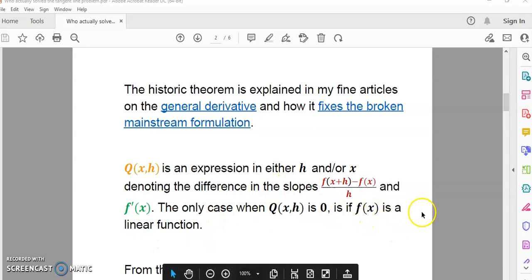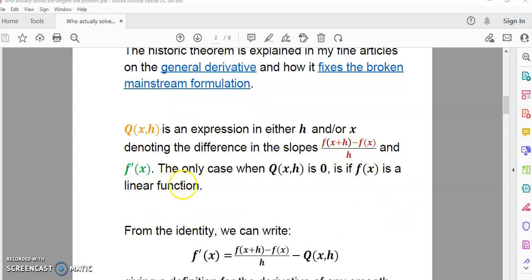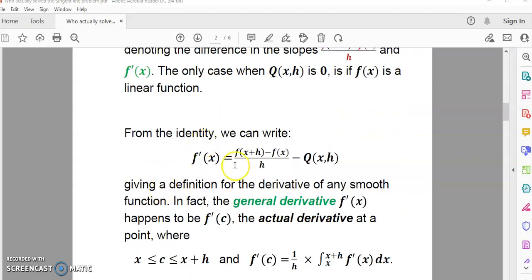So Q of x,h is an expression in either h and or x, and it denotes the difference in the secant line slope and the tangent line slope. From the identity, we can actually define the derivative, and we can write it down like this, and it's exactly equal to this expression on the right-hand side. There's no need to take limits or any other of that nonsense. And it works for every single smooth function. There's no function that it does not work for.